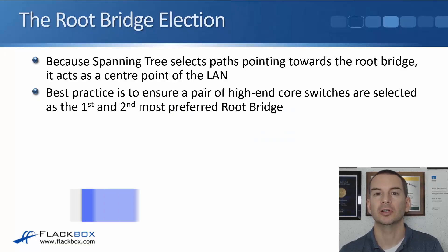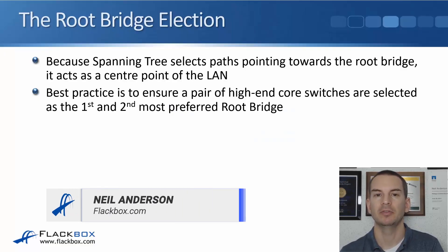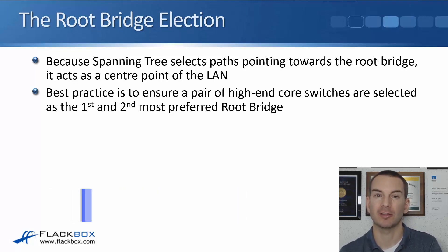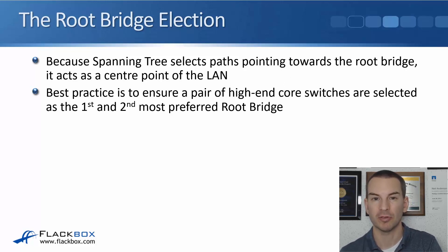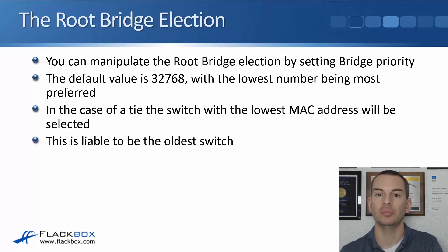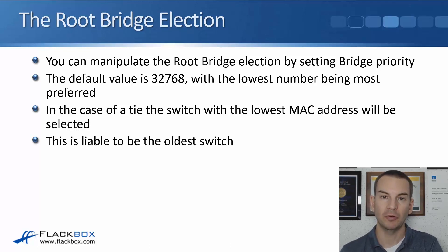In this lecture you'll learn about manipulating the spanning tree root bridge election. Because spanning tree selects paths pointing towards and away from the root bridge for forwarding traffic, the root bridge acts as a center point of the LAN. Best practice is to ensure that a pair of high-end core switches are selected as the first and second most preferred root bridge. You can manipulate the root bridge election by setting bridge priority on your switches.